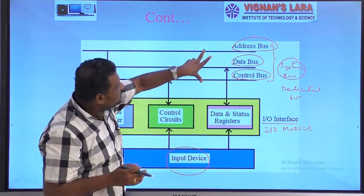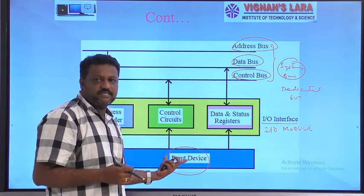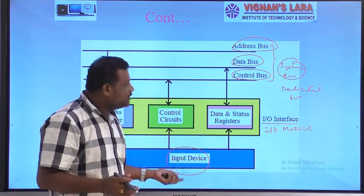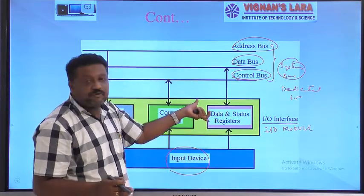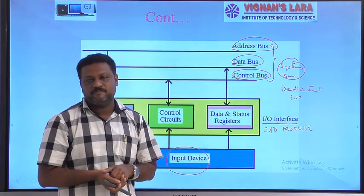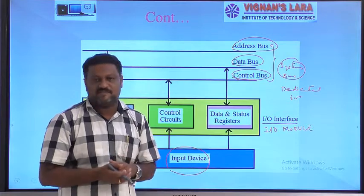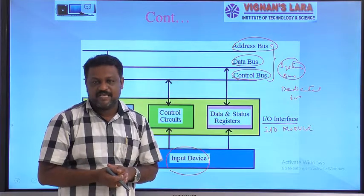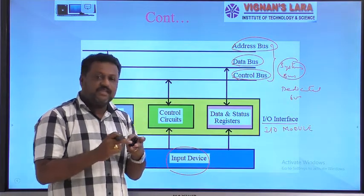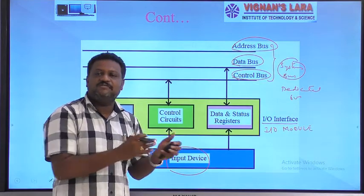To provide communication between the system bus and an external I/O device or peripheral, we use an I/O interface or I/O module. An I/O module consists of three different partitions or blocks.